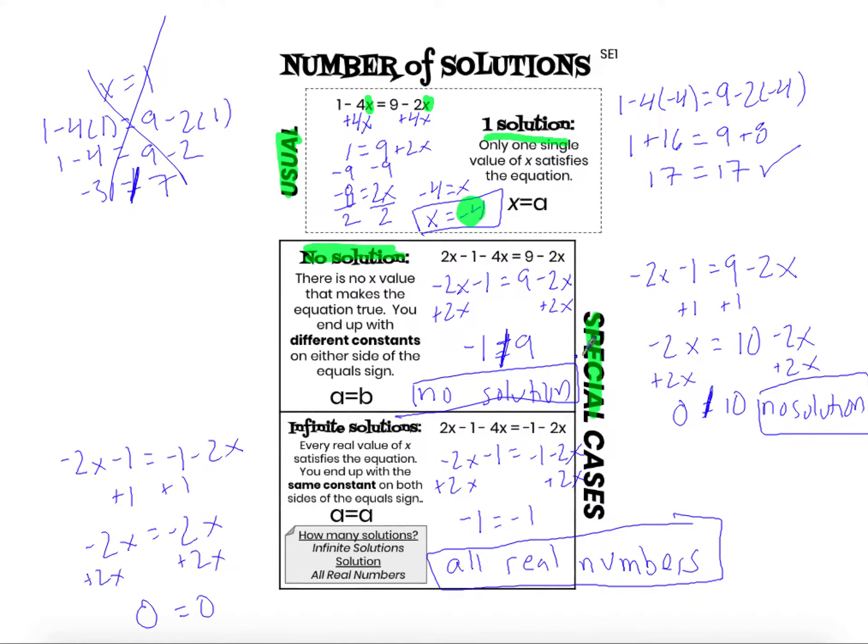If you'll notice, a special case always is a situation where you have the same coefficient, once you've simplified both sides of the equation, the same coefficient on both sides. Negative 2x minus 1, 9 minus 2x. Negative 2x minus 1, negative 1 minus 2x. So the special solution case is when there is the same coefficient in front of x on both sides of the equation.